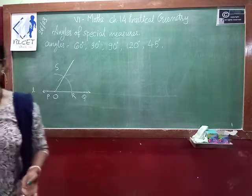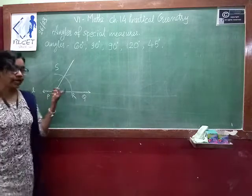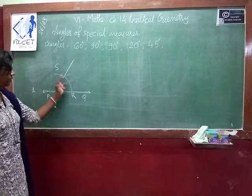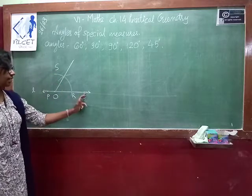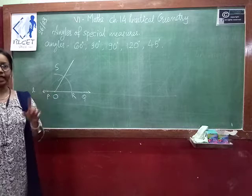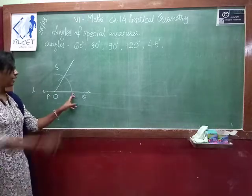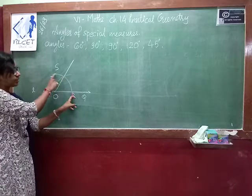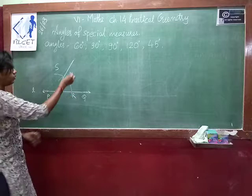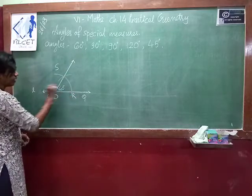So constructing a 60 degree angle is very easy. You take any measurement on the compasses and draw the first arc which cuts the line at R. Without changing that measurement, keep your pointer on R and draw another arc which cuts the previous arc. Name it as S and join those two points. This is your 60 degree angle.